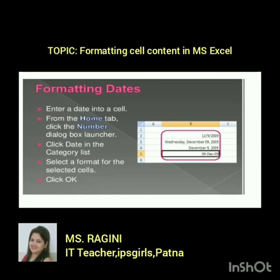For date formatting, enter a date into the cell. From the Home tab, click the Number dialog box launcher, then click Date in the Category list and select the format you want for the selected cell. Click OK and the date will appear in your chosen format.